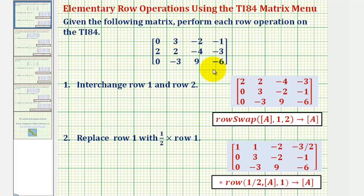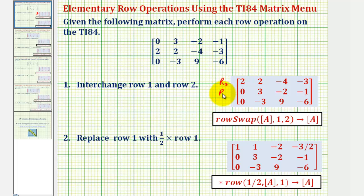Our first row operation is interchange row one and row two. So row one will be the original row two, and row two will be the original row one. Notice there's really no need to do this on the calculator, except we are going to store this new matrix in the calculator and perform more row operations on it. To perform this row operation, we'll use the row swap function.